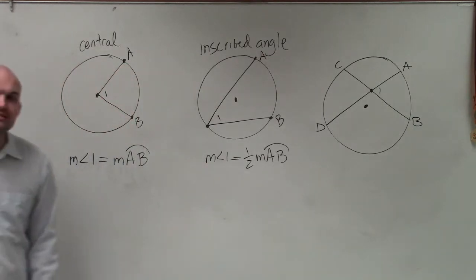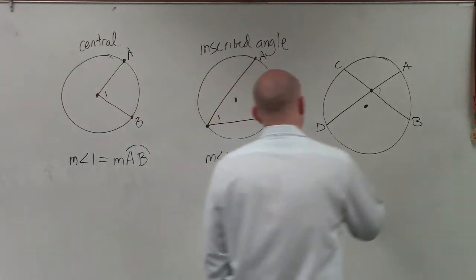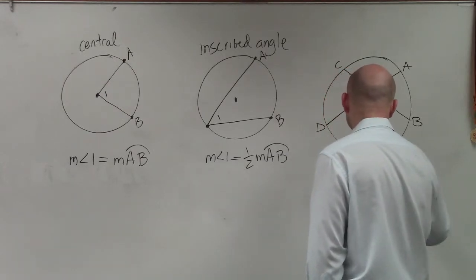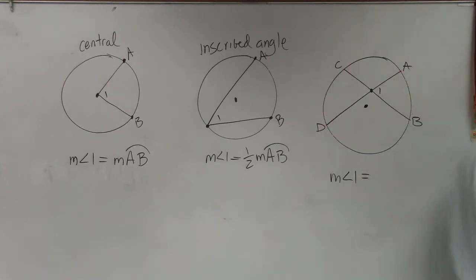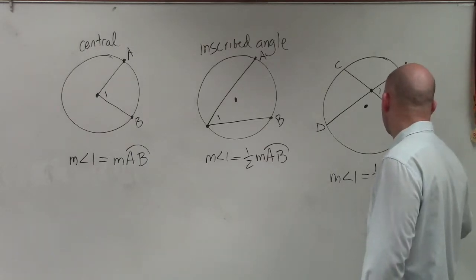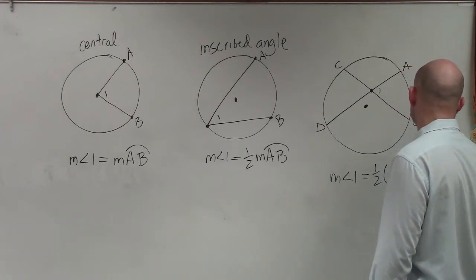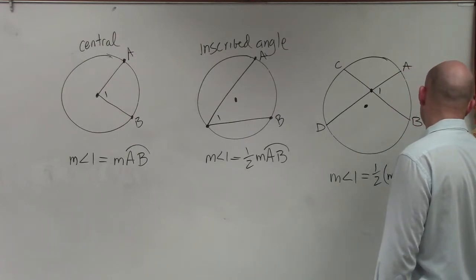So if I ask you what is the measure of angle 1, our formula is the measure of angle 1 is equal to 1 half times the sum of the measure of arc A B plus the measure of arc C D.